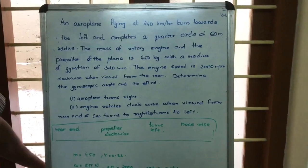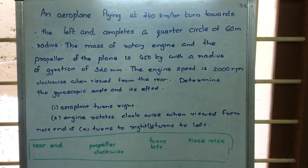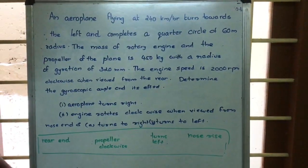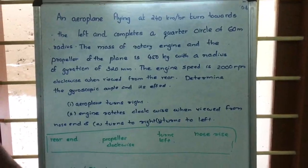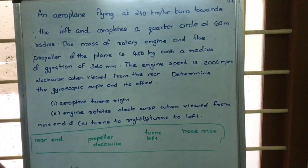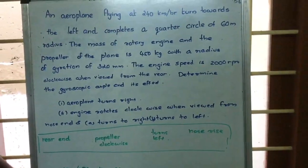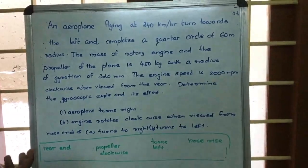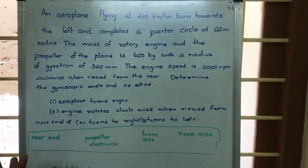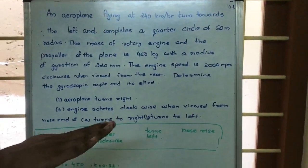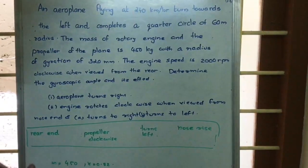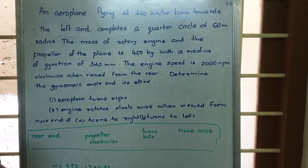When we are considering this aeroplane, in the front side there will be a propeller, and when this aeroplane is taking a left turn, there will be some effect called gyroscopic reaction effect. Because of that, this aeroplane will tilt, and that effect is discussed in this program.